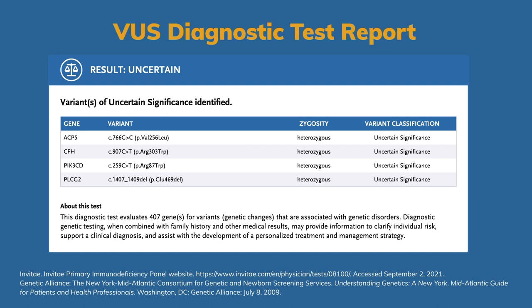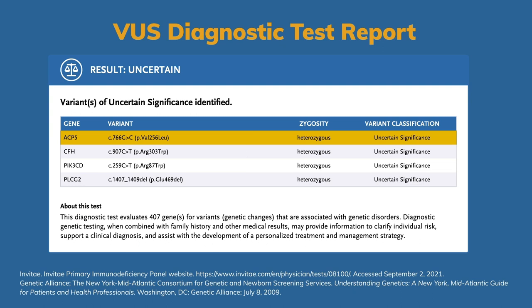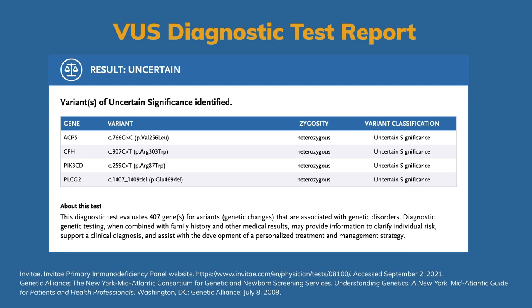We will examine a VUS revealed from running an Invitae primary immunodeficiency panel, and you will see in this report how we can detail the answers to some of these questions, while other answers will require additional research. Because this is a panel of over 400 genes, you would expect a few VUSs. And in our case, in this report, there were four different variants.